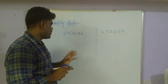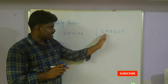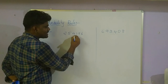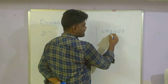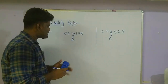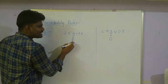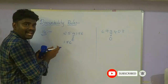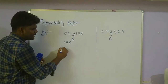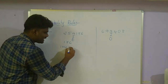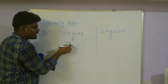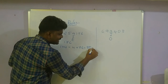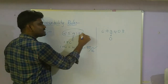Now we are entering into the 16 divisibility rule. Two examples are given: 25417664 and 69340 8. We observe the thousands place. When the thousands place is even, take the last three digits: 176. Take the hundreds place digit, which is 1. Multiply by 4: 1 × 4 = 4. Add 4 to the remaining digits (76): 76 + 4 = 80. 80 is divisible by 16, so the entire number is divisible by 16. This logic applies when the thousands place is even.